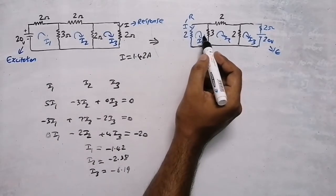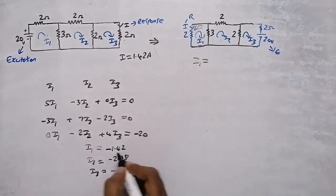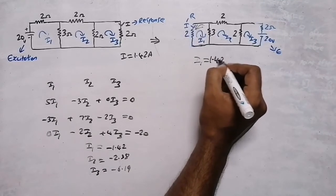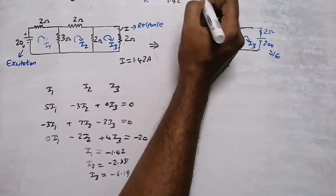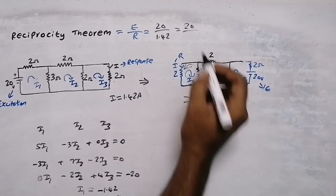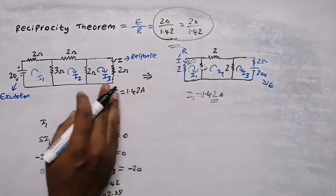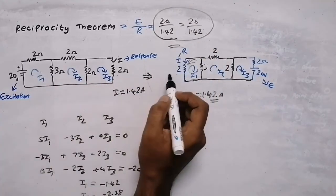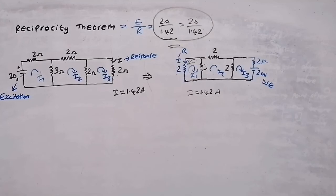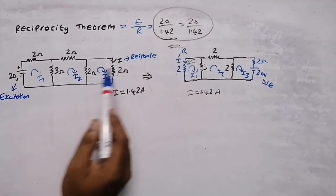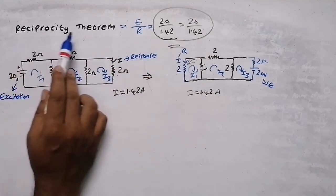The direction of current will be opposite to what I assumed, so my i value is i1 = 1.42A. Here also I'm getting 1.42A as the current. Excitation is 20V and response is 1.42A — the same excitation-to-response ratio as before. For both circuits the ratio is the same. For a linear network, if we interchange the excitation and response, the ratio of excitation to response remains the same — this is called the reciprocity theorem.